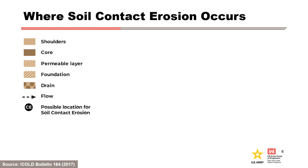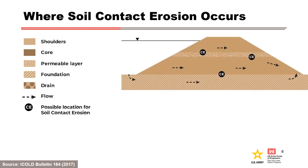Soil contact erosion may occur between any granular layer such as a filter, drain, or riprap, and fine soil in contact with that layer, where high velocity flow in the coarse soil parallel to the contact erodes the fine soil. These characteristics usually correspond to the interface between the core and a gravelly foundation. A homogeneous embankment dam is shown with the potential for soil contact erosion at a layered fill due to segregation during construction and at the interface with a coarse foundation soil.